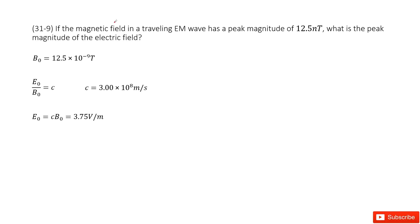So here we can see the magnetic field density of this EM wave, the peak magnitude is given. So that is B0 is given. You need to find the peak magnitude of electric field density. This is E0, right?